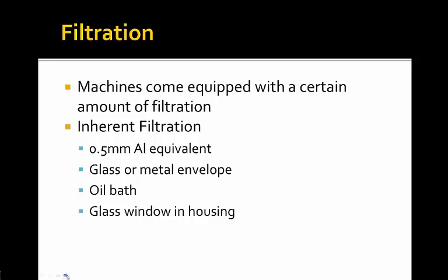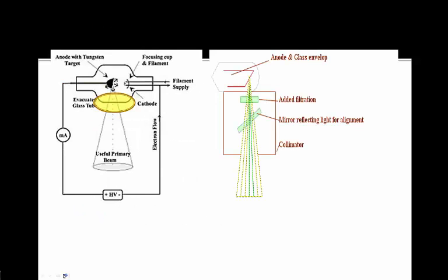Now we're going to cover filtration. Machines come equipped with a specific amount of filtration called inherent filtration. On our x-ray tubes it is 0.5 millimeter aluminum equivalent. It is also contained in a glass or metal envelope, sits in an oil bath, and has a glass window in the housing. The filtration is added right after the x-ray is produced at the anode — the x-ray beam passes through the added filtration and then comes down through the collimator to our patient.